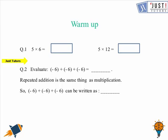So question number 1: 5 times 6, that is 30, and likewise for the B part, 5 times 12, that is 60.